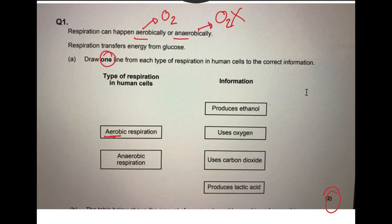So aerobic respiration, as we said, needs oxygen. So that's this one right here. Anaerobic respiration does not require oxygen. It doesn't produce carbon dioxide. Sorry, it doesn't use carbon dioxide. Aerobic respiration produces carbon dioxide, so it's not that one.